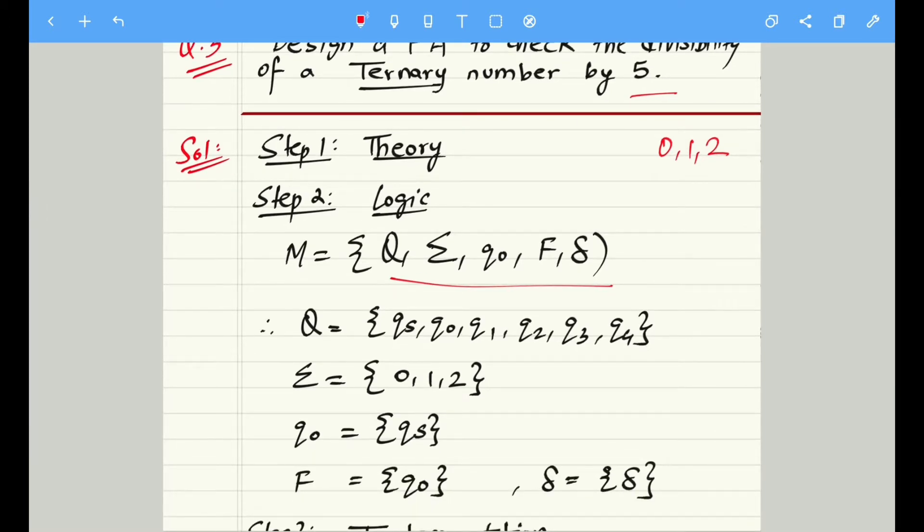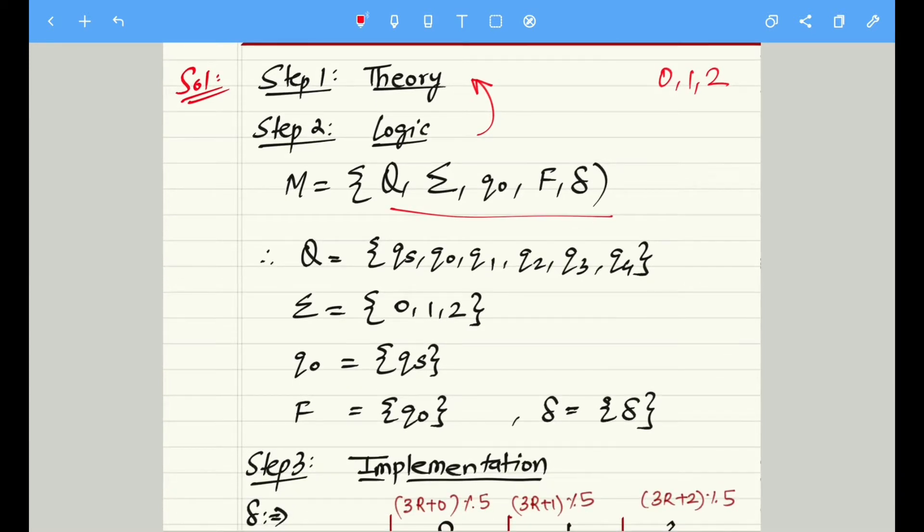So the theory is exactly same. Step number 2 is logic. Here we are discussing finite automata, so accordingly the theory will also change. I have shown in the previous video what exactly you are expected to write whenever you are talking about FSM, and similarly whenever you are talking about FA.